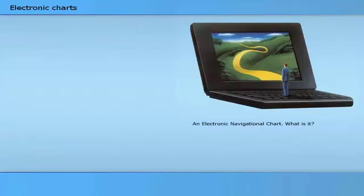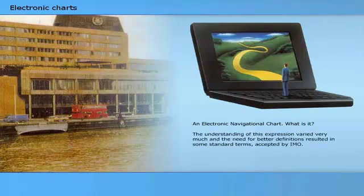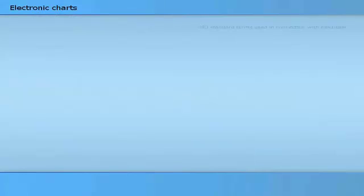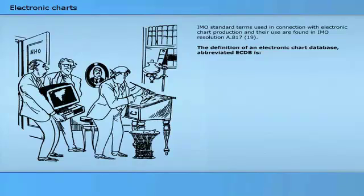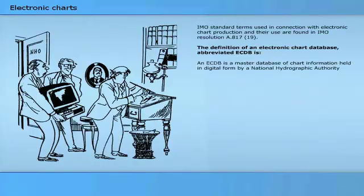An electronic navigational chart – what is it? The understanding of this expression varied very much, and the need for better definitions resulted in some standard terms accepted by IMO. IMO standard terms used in connection with electronic chart production and their use are found in IMO Resolution A817-19. The definition of an electronic chart database, abbreviated ECDB, is: an ECDB is a master database of chart information held in digital form by a National Hydrographic Authority.